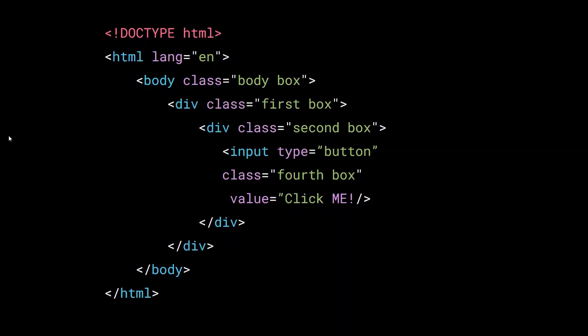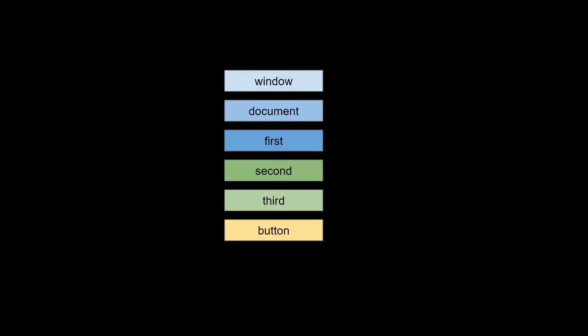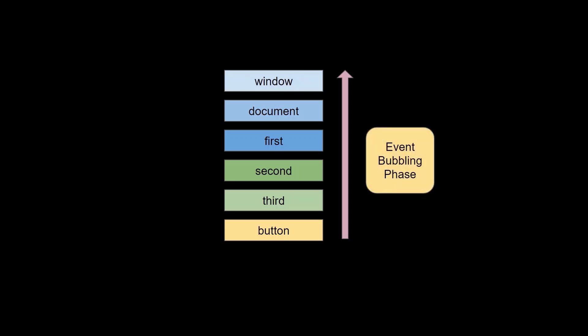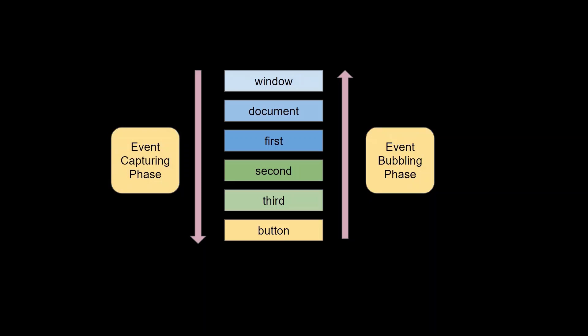Let me show you this with some slides. We have the hierarchy: window, document, first, second, third, and the button. When we click the button, the event propagates from button to third, third to second, second to first, and eventually to the top-level document — this phase is called event bubbling, which is the default. But there is a second phase called event capturing, which starts from the top-level document and propagates down to the element where the event is fired.